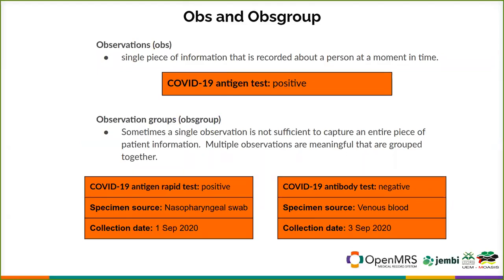We touched a bit on observations. OBS is the name of the table, but it's really an observation — a single piece of information that's recorded about a patient at a moment in time. For example, last week a patient came in and had a COVID-19 antigen test which was positive. Then this week, they came in again; maybe today's test showed an invalid answer. So it's an observation at a different time about something observed about a patient.